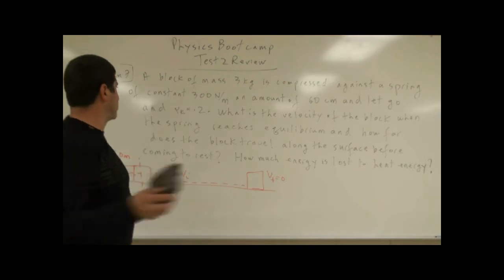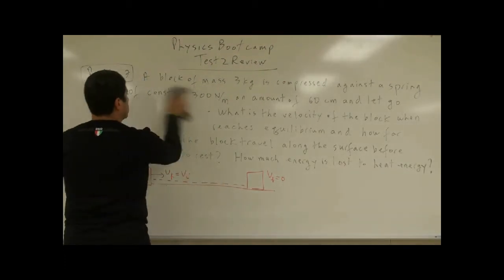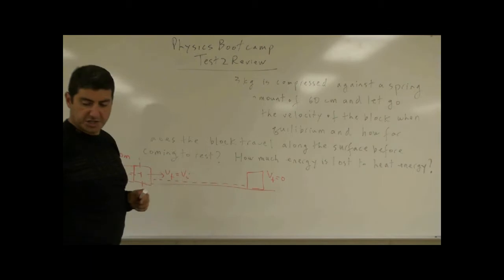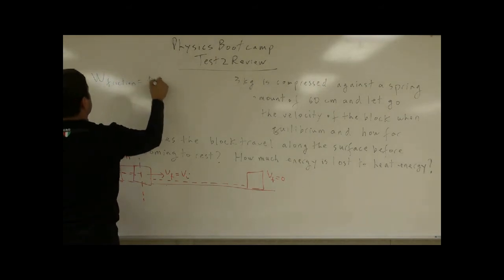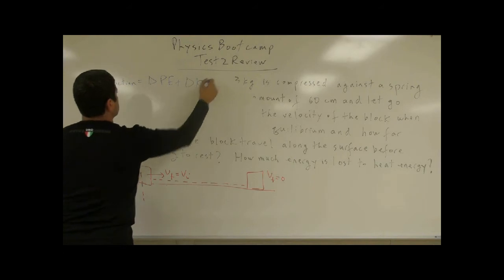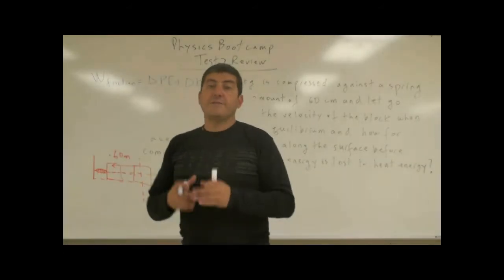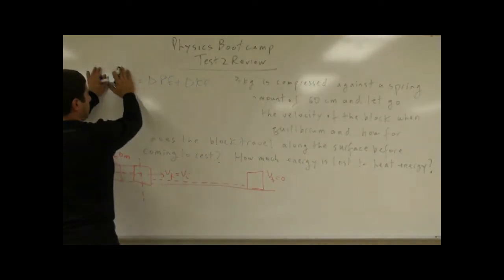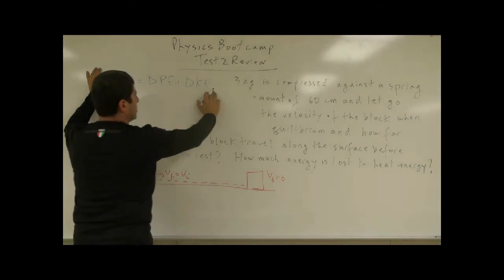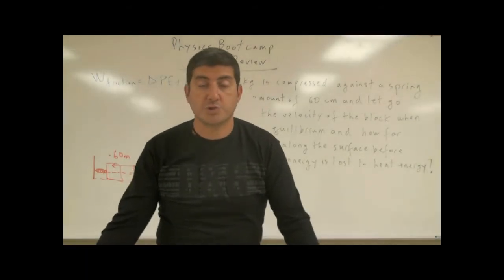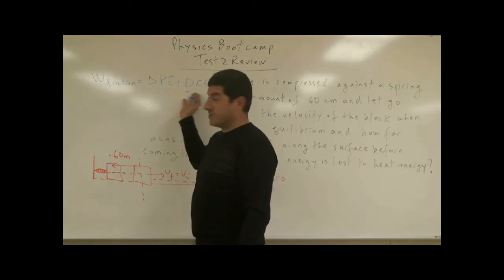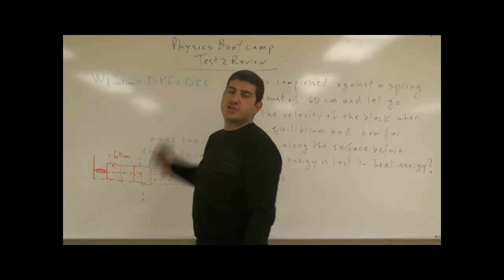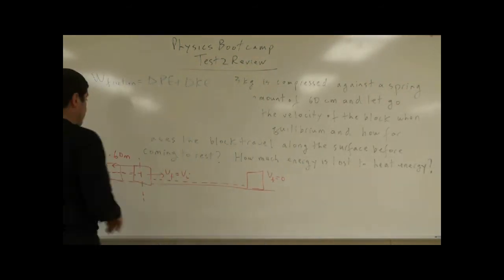So what are the equations of motion we're going to use here? The basic equation is: work of friction equals the change in potential energy plus change in kinetic energy of the system. If there is no friction on the surface, then the work of friction is 0. That means the change of potential energy plus the change in kinetic energy is 0, which essentially means the total energy of the system doesn't change. But in this case, there is a work of friction.